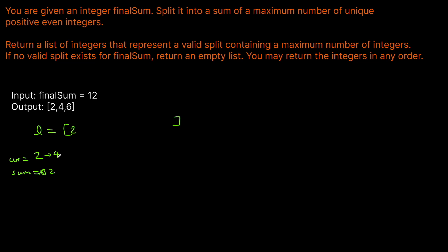The next even number we can use is 4 — we add 2 each time to move to the next even number. We add 4 to our list and update our sum to 6. Our sum is still less than 12, so we continue to 6. We add 6 to our list and our sum becomes 12. We check: is our sum less than 12? No — so we would go to 8 next.